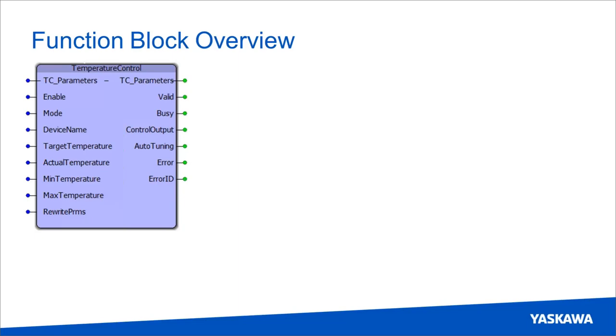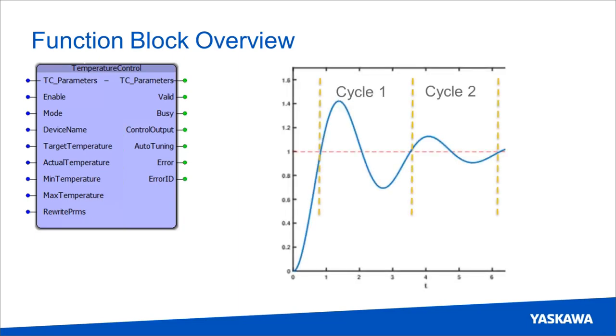And then the rewrite parameters input is used to overwrite the calculated gains in the file. So it can be used to store new gains if you want to manually fine-tune the PID if necessary. And the function block toggles the control output fully on and fully off while autotuning, and this will cause slight oscillations as the temperature rises and falls below the target. And the gains are calculated from the data captured during each autotune cycle, which are then averaged together.